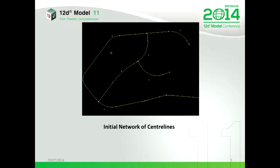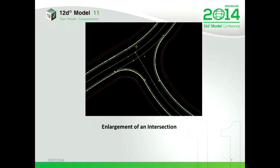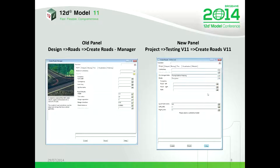That's all we need to run Create Roads — just an initial network of center lines. After running it we get a collection of strings including any intersections we need to produce. I'll just show you what the old panel looked like — it had a pretty picture on the side, which we've lost in the new one.